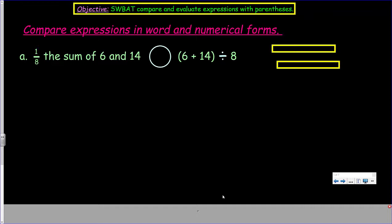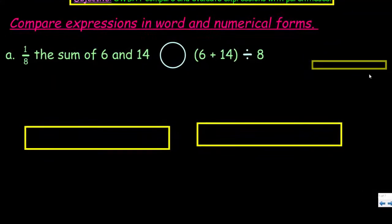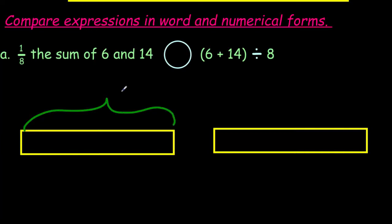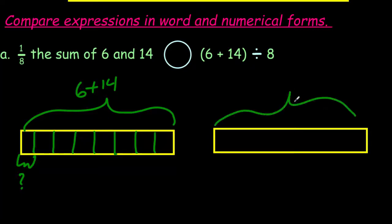Let's go to the next problem. It says compare expressions in word and numerical forms. It says one-eighth the sum of six and 14. I'm going to compare that with the sum of six and 14 divided by eight. Maybe I should draw a tape diagram to show. They sound very similar. And I'm going to make them exactly the same size. So this would be the sum of six and 14. Six plus 14 divided by eight. So that means I'm going to need to make quarters, then I need to make some eighths.